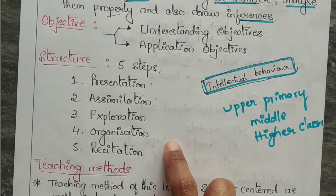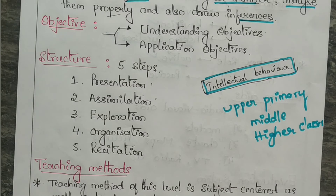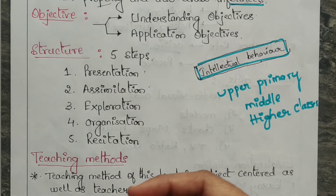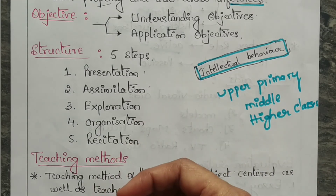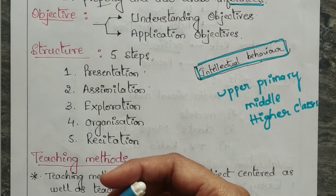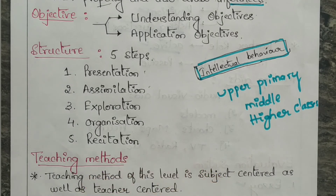The fifth step is recitation. Here pupils will present the content orally — by repetition and explanation to the teacher, not by writing. They will show their knowledge by oral method.